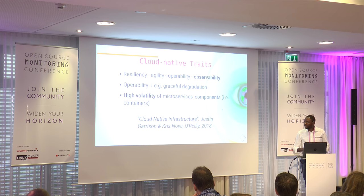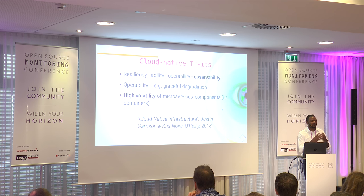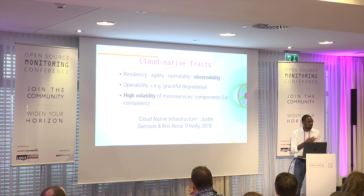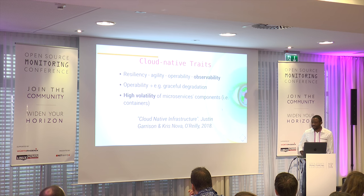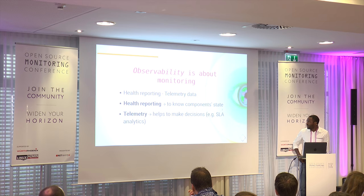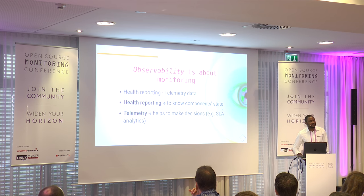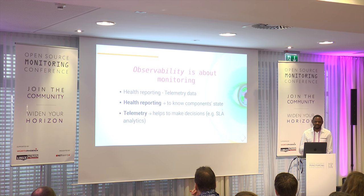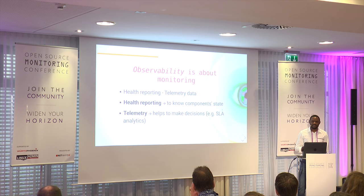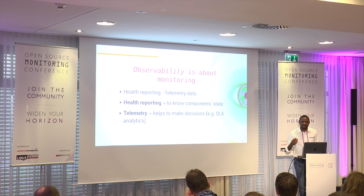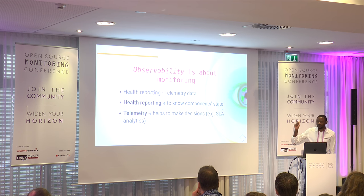Regarding Observability, you need to consider resiliency, agility, and operability to have a view of how your IT is operating. There is a good book from Cloud Native — if you have time, you can read it. About observability, you have two main aspects. First, health reporting — important. It is not a standard probe that just pings and says everything is up. No — it is the application itself that says, according to some internal metric, 'I'm okay, I'm up, I'm working.' This is about health monitoring.